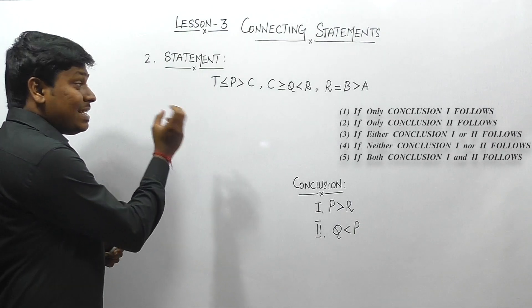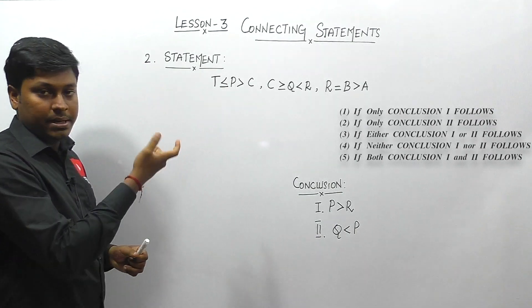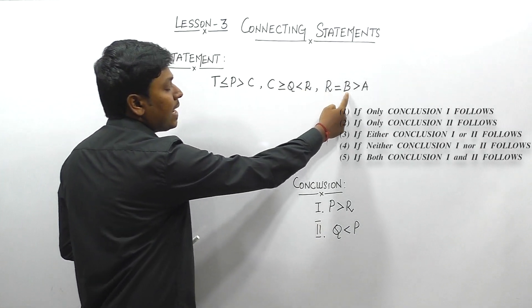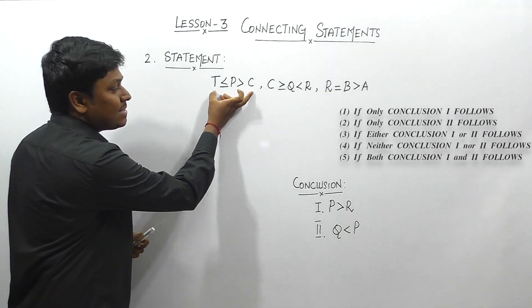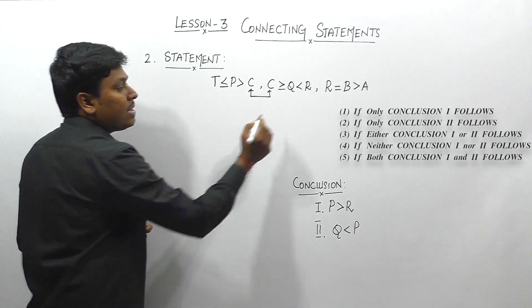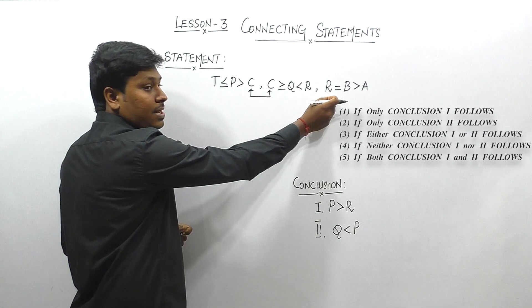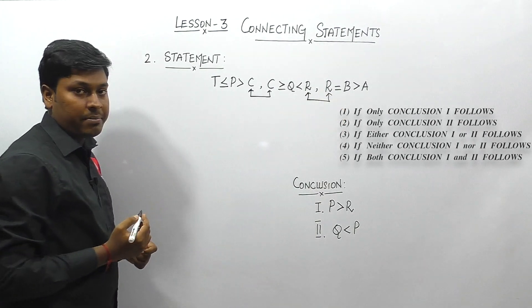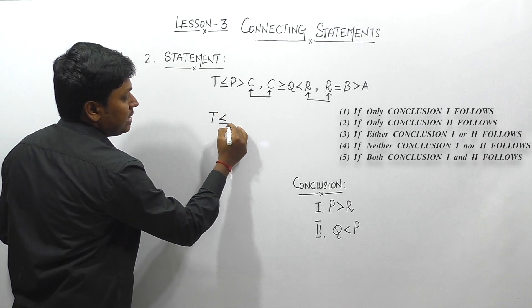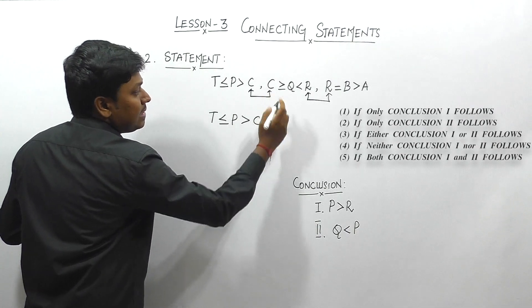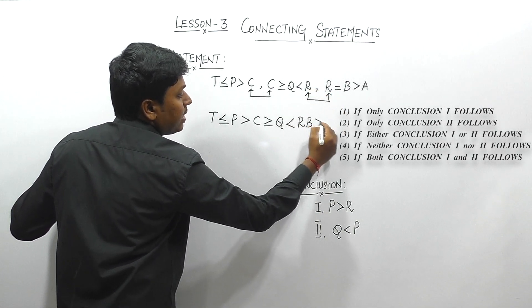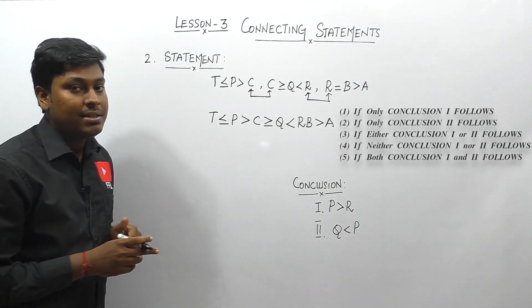Question 2 has three statements. Statement 1: T ≤ P > C. Statement 2: C ≥ Q, Q < R. Statement 3: R = B, B > A. Statement 1 ends at C and statement 2 starts at C; statement 2 ends at R and statement 3 starts at R. Connecting all three gives the single expression: T ≤ P > C ≥ Q < R = B > A.